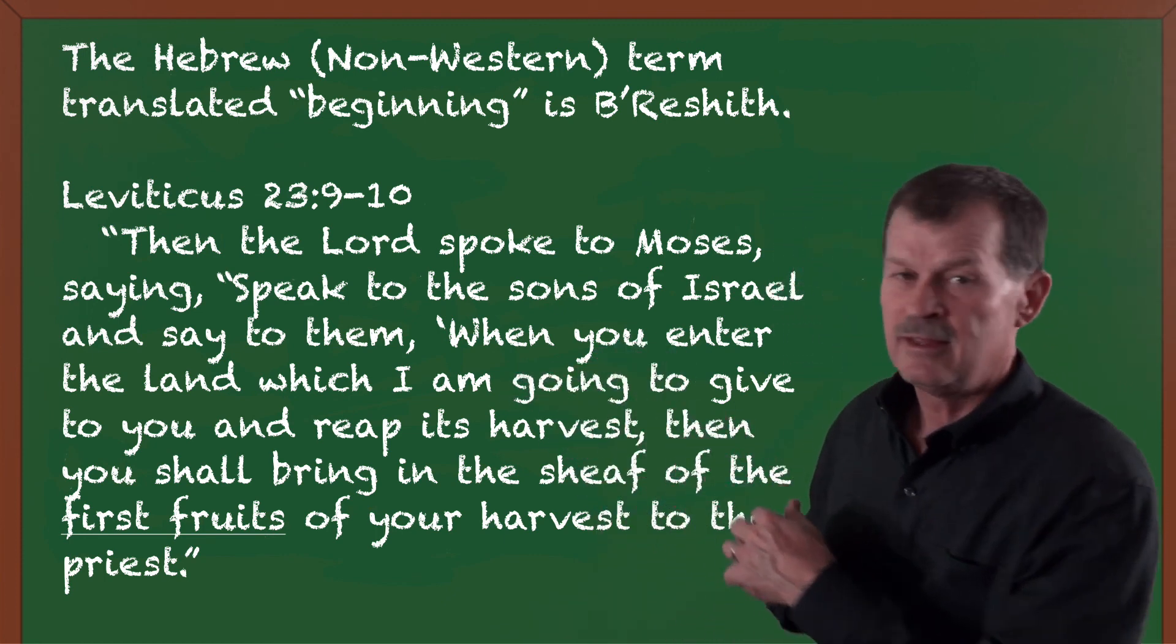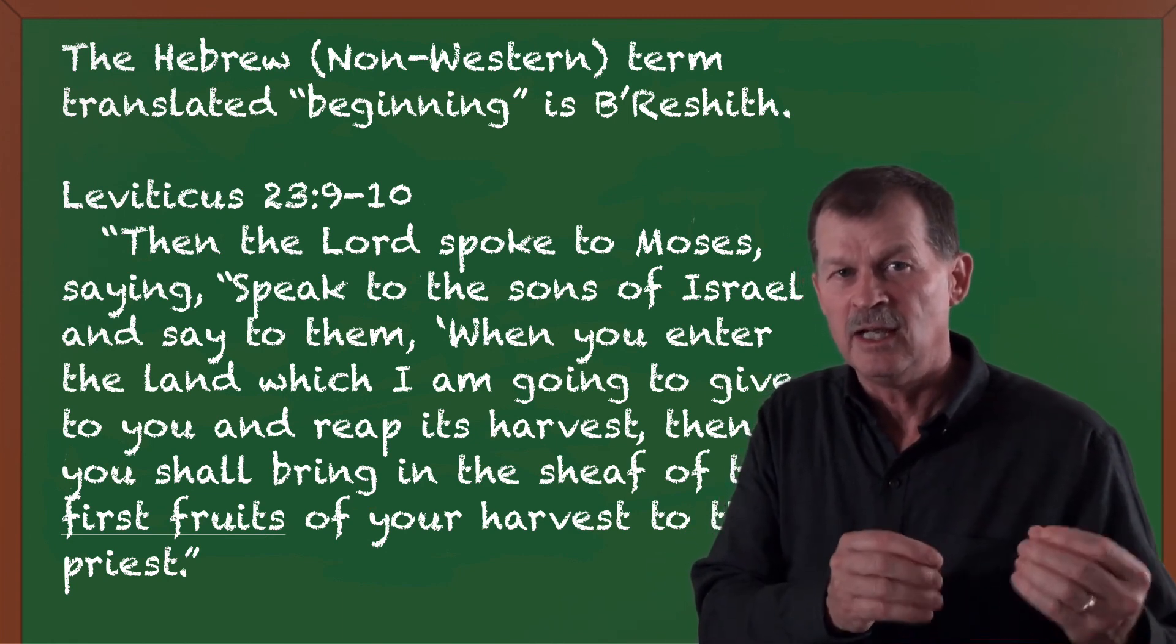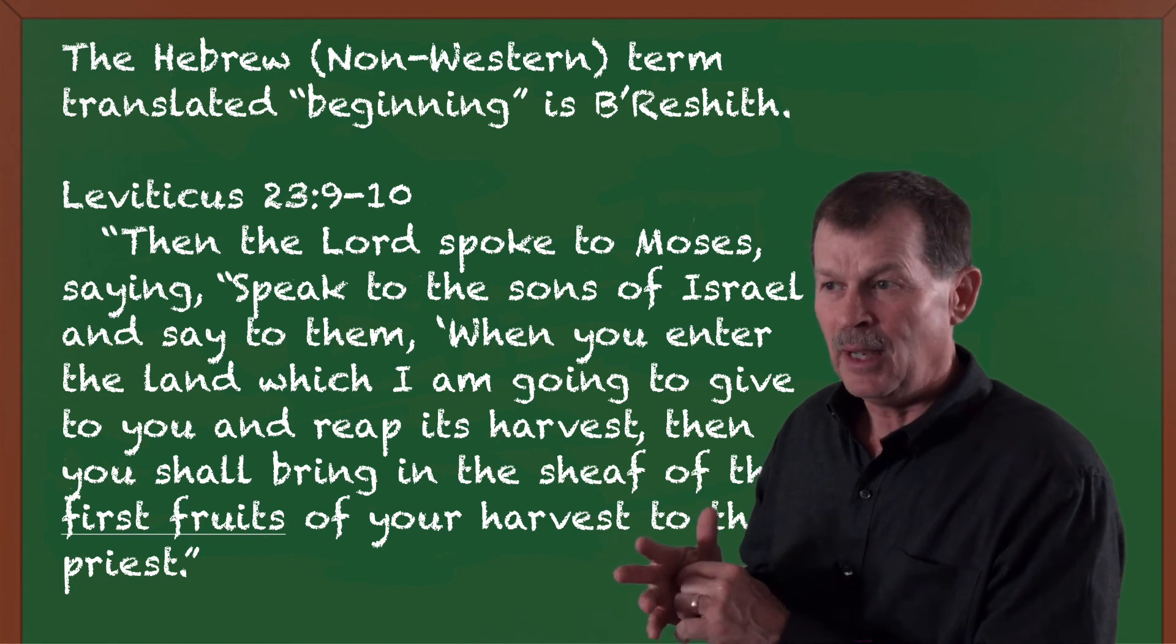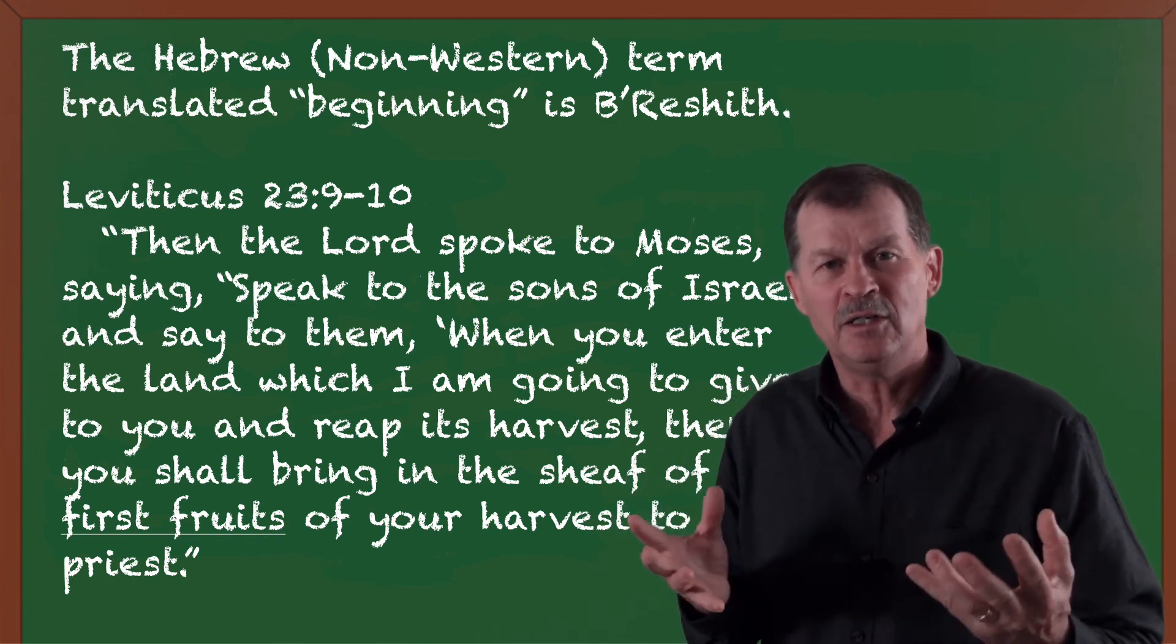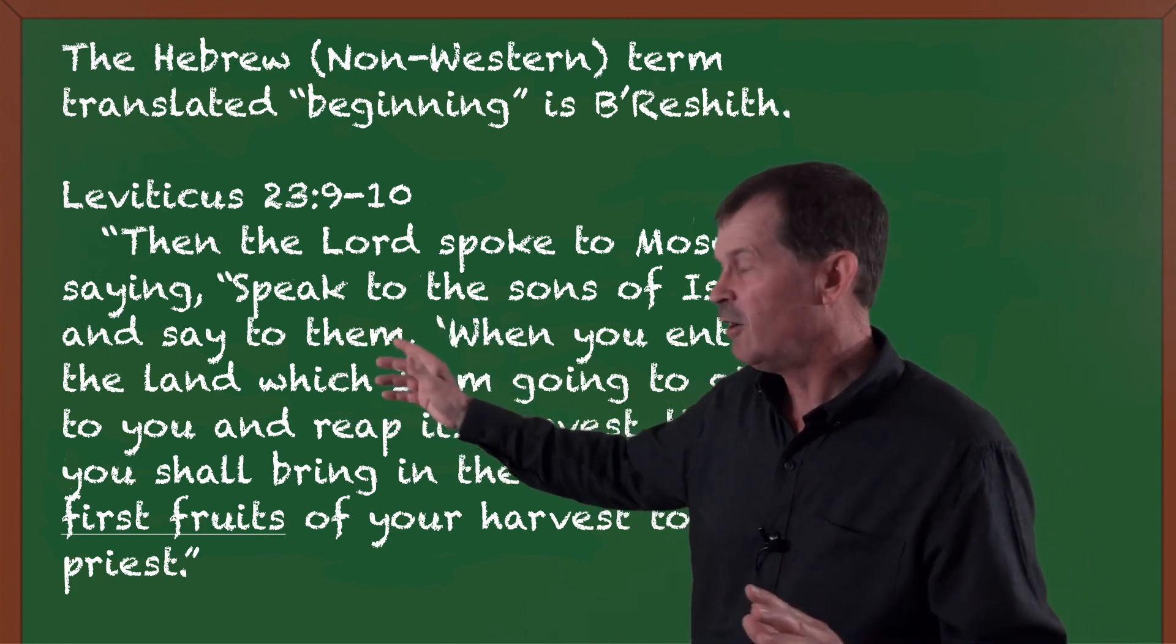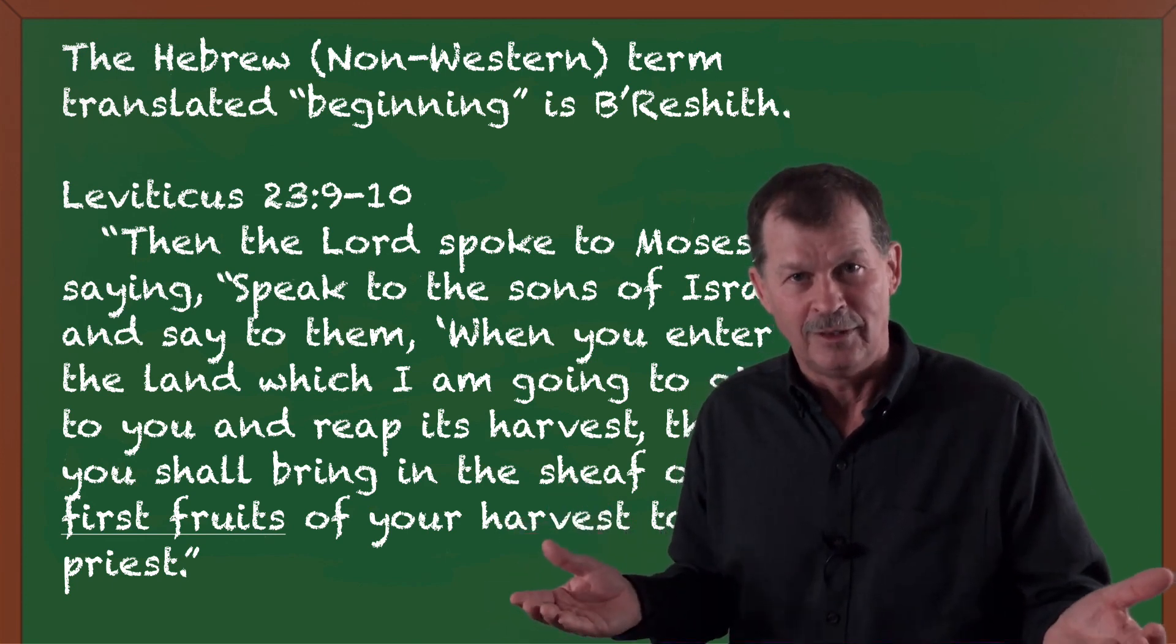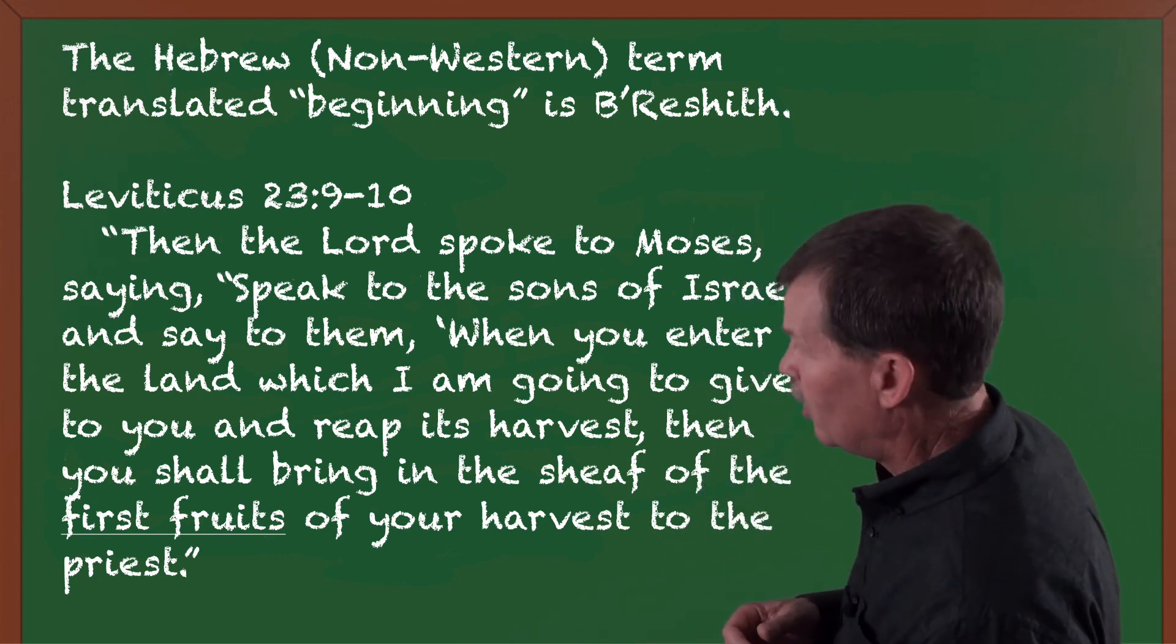First fruits, that is reishith. That is the same word used in Genesis chapter 1, in the beginning. In the reishith. And so the Hebrew term may not be referring to point in time, but referring to the first fruits, the first quality. It's the first abundance. Is the rest of the harvest done? No. It's still maturing, and it's yet to be harvested. It's still filling in. But reishith is the first fruits, the first of that which is mature.